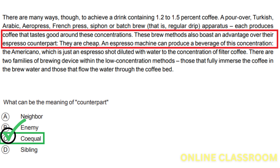Now analyzing the meaning of the term 'counterpart.' Option A, neighbor, is incorrect — counterpart does not refer to a neighbor in this context; it is used to compare brew methods to espresso and highlight their advantages. Option B, enemy, is also incorrect for the same reason. Option C, coequal, is correct. The term counterpart means a person or thing that has the same function or characteristics as another. Here, the brew methods are being compared to espresso, meaning they have similar functions or characteristics.